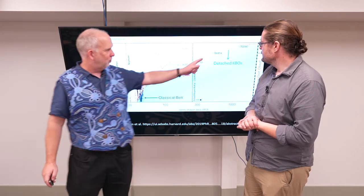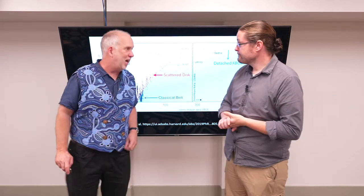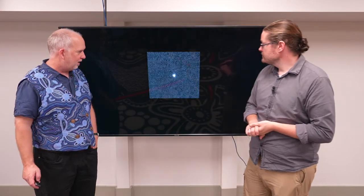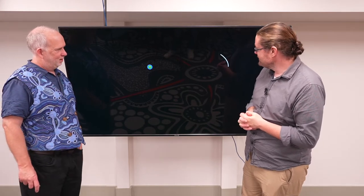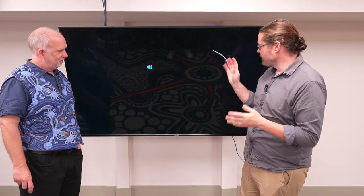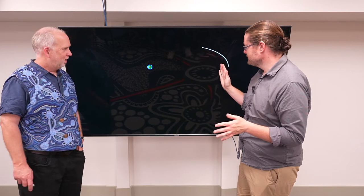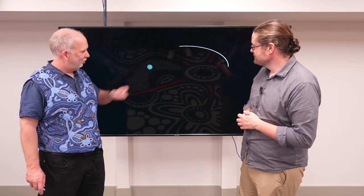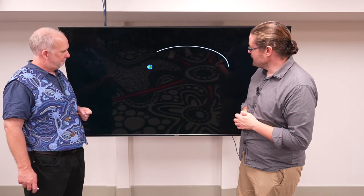Sedna is the first and most famous of these so-called detached Kuiper Belt objects. That's what it looks like - it's a dot. And here's its orbit. So there's Uranus and Neptune orbiting the Sun. It's really far out, much further out than Pluto. So Pluto is about there on the scale.